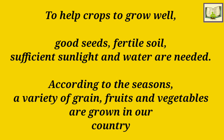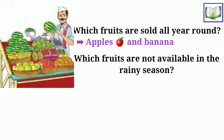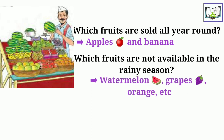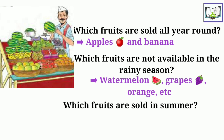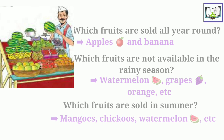According to the season, varieties of grains, fruits, and vegetables are grown in our country. Let's see which fruits are available around us in which season. We can look at a fruit seller and solve some questions. Which fruits are sold all year round? Apples and bananas are available every year. Which fruits are not available in the rainy season? Fruits like watermelon, grapes, and oranges are not available in the rainy season. Which fruits are sold in summer? Mangoes, chickoos, watermelon, etc. are sold in summers.